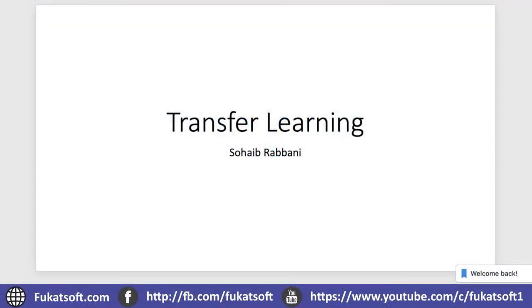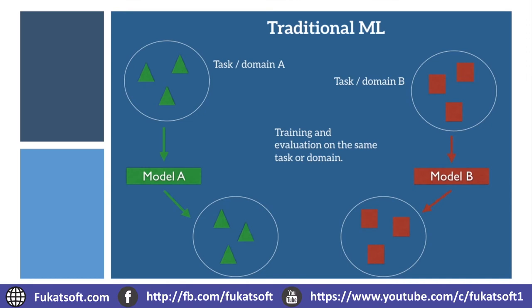Today the topic is transfer learning. In traditional machine learning, if we have two problems — classifying whether an image is a tiger or not, and classifying whether an image is a leopard or not — we take a dataset with images of tigers and other animals, define an architecture, and train it. Similarly for the leopard problem, we take a dataset, define an architecture, and train it.